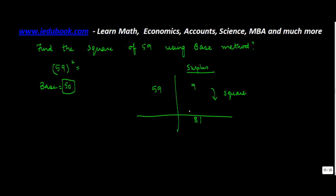9 square, which gives you 81. Right, then add 59 and 9. This gives you 68. Now multiply the 68 with the base.